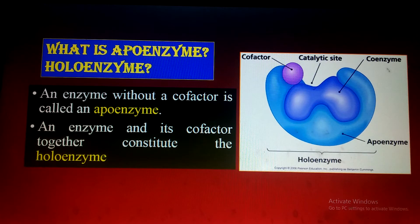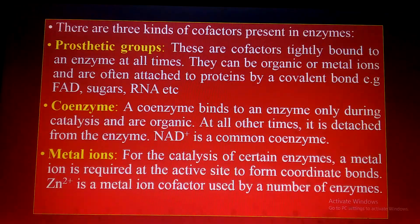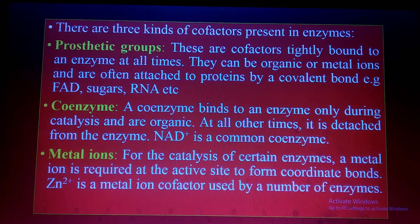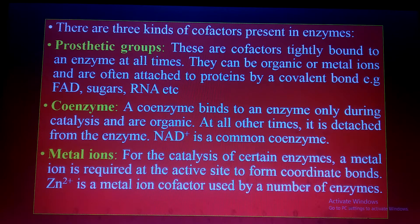What are the types of cofactors? Cofactors are of three types: prosthetic groups, coenzymes, and metal ions. Prosthetic groups are cofactors tightly bound to the enzyme at all times. They can be organic or inorganic and are often attached to the protein by a covalent bond. For example, FAD acts as a prosthetic group, and many metallic ions can also act as prosthetic groups.